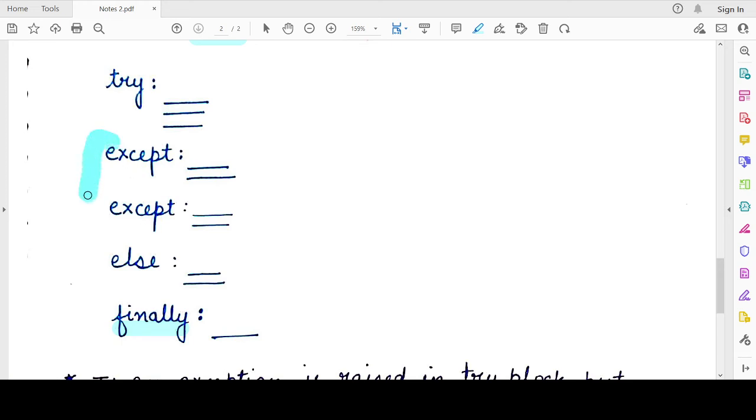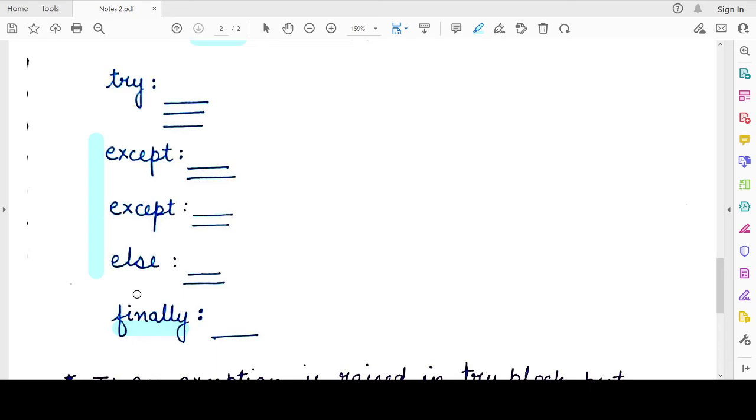Otherwise, if there are multiple except cases, then you will write finally after all those cases. And if there are except cases along with an else clause, then the finally will occur at the very end of all these.